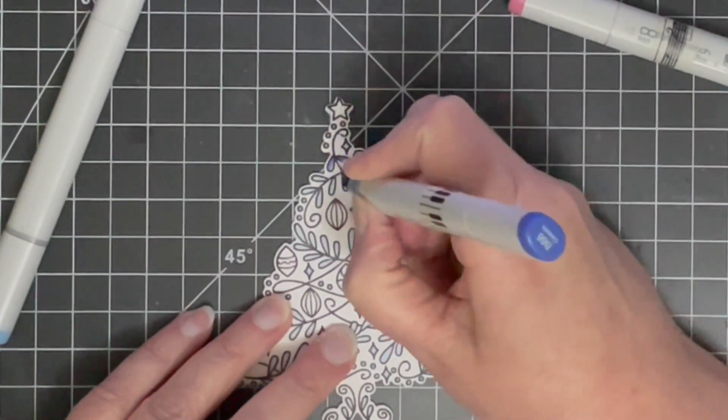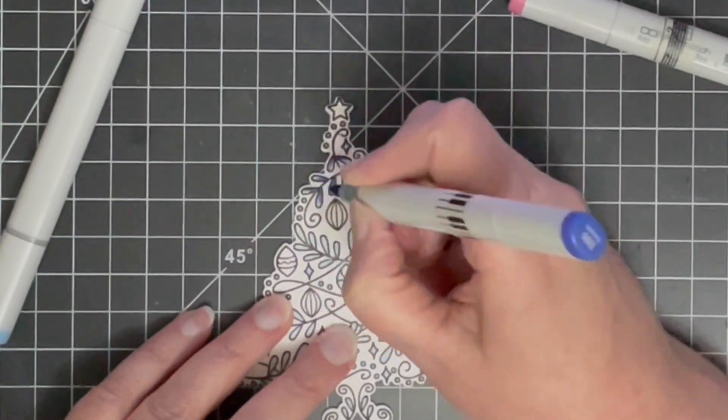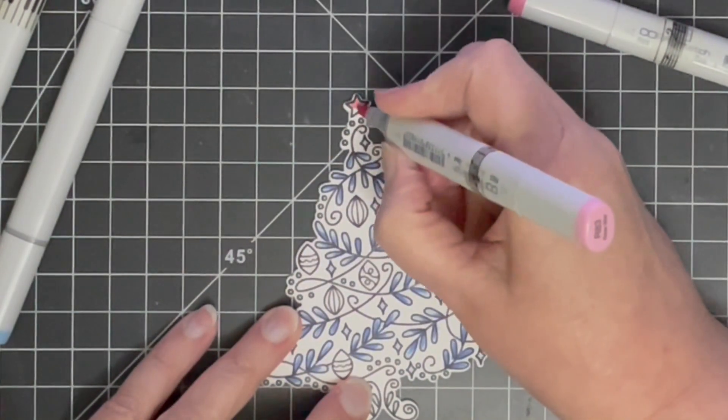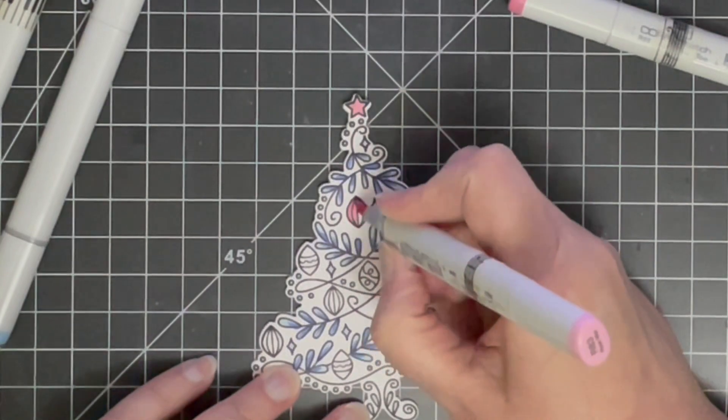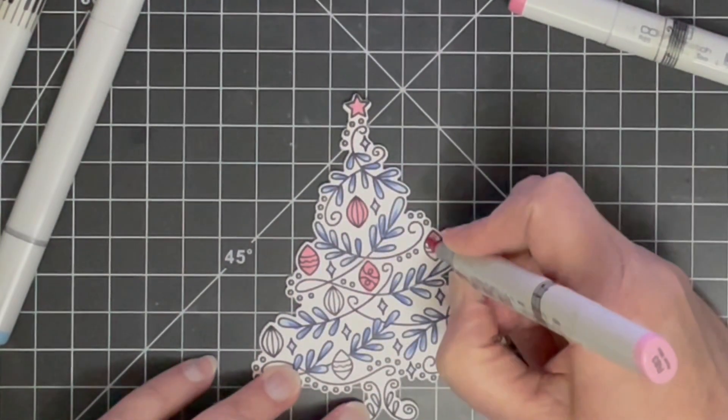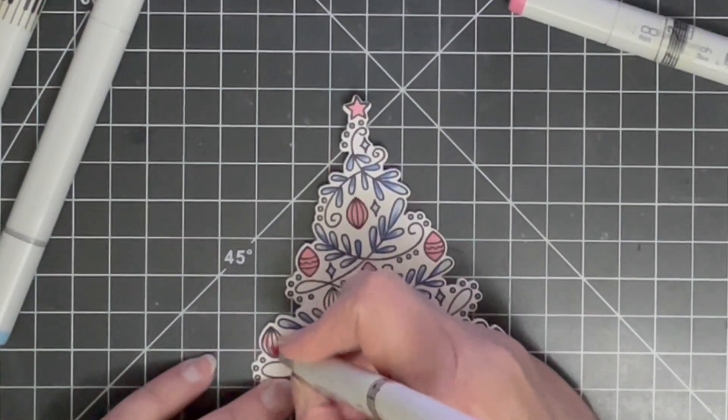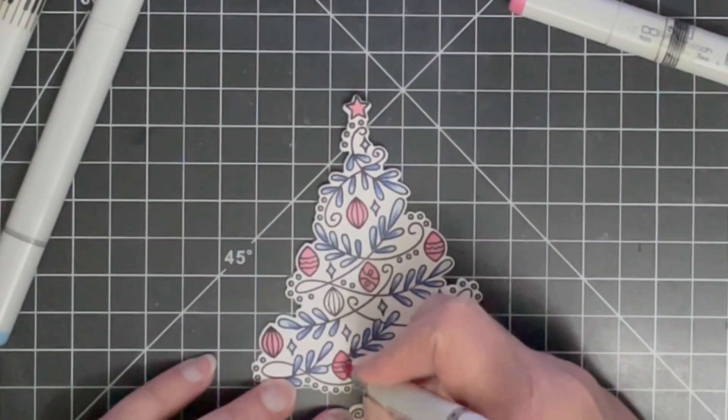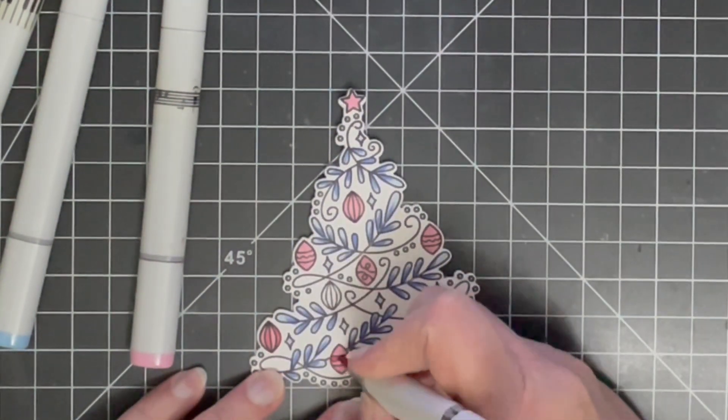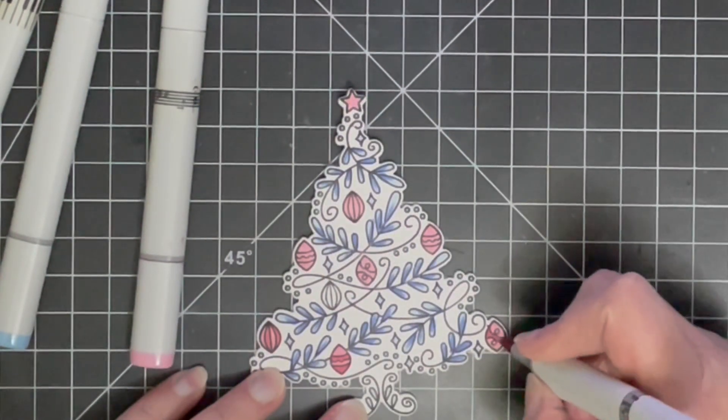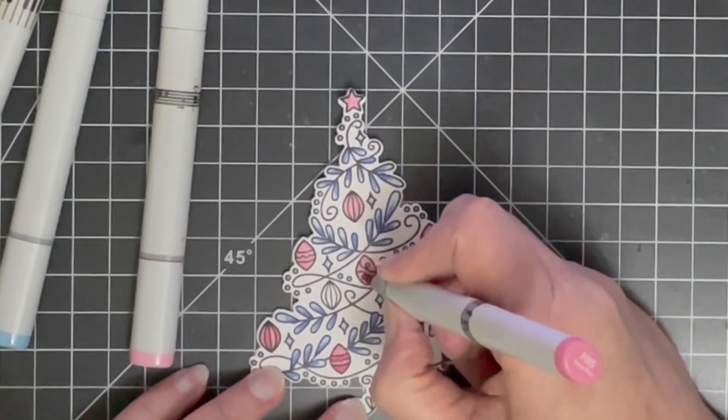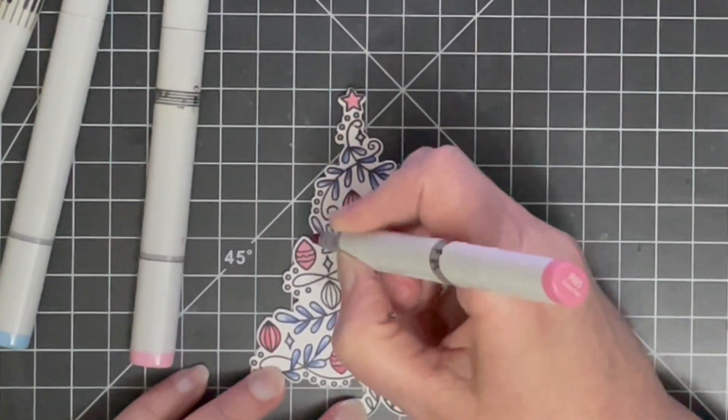Then right at the attachment point of those leaves to the sort of frond that each one is attached to, I'm adding a little bit darker of that purpley blue. Now with the star at the top and also with the ornaments around this card I'm using some pinks. These are in the R family but they're sort of a higher number so they're more grayish color. I'm just adding a little bit of detail with a slightly darker one here.